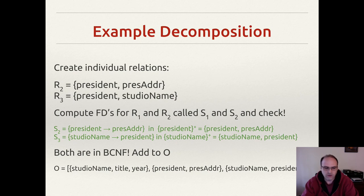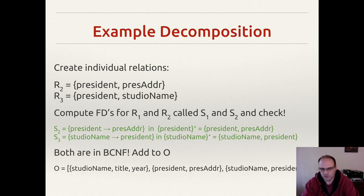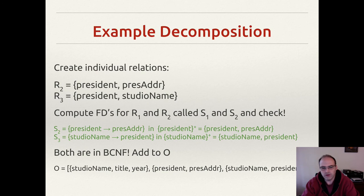Our output collection now has three relations: one consisting of studio name, title, and year; one with president and president address; and one with studio name and president. These are the three individual relations that are all Boyce-Codd normal form compliant.